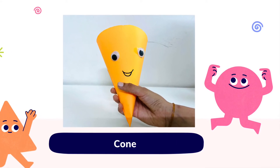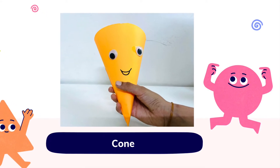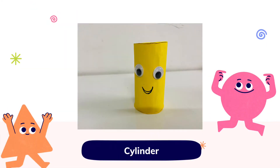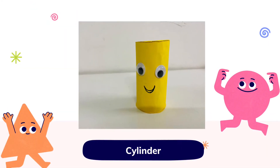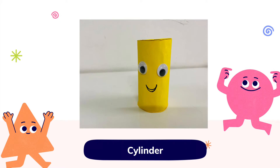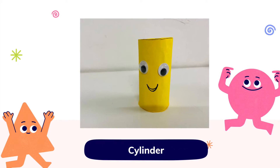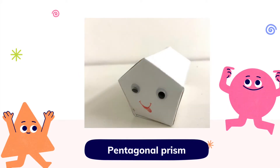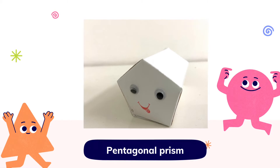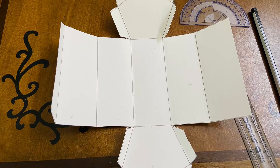And one vertex. A cylinder has three faces, two edges, and zero vertices. A pentagonal prism has seven faces, fifteen edges, and ten vertices.